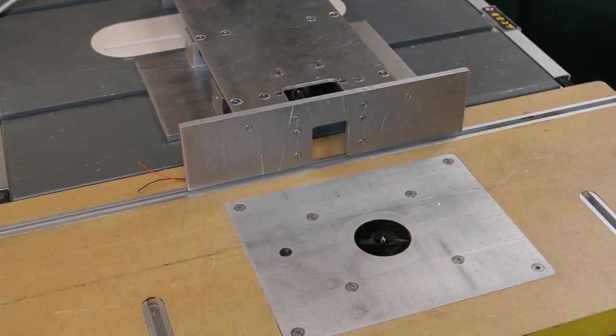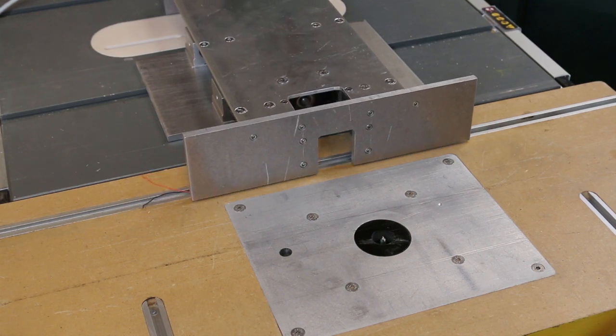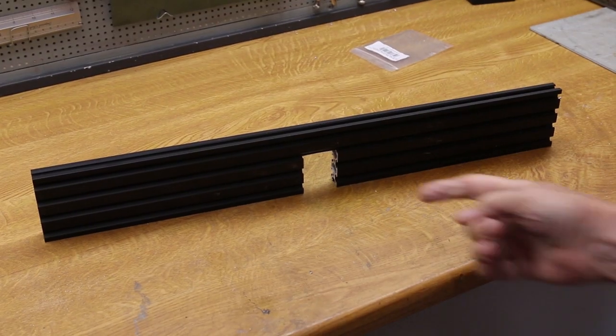Now that I have the fence mechanism working, as you can see, it's time to make the fence itself. First I cut the slot for the router.